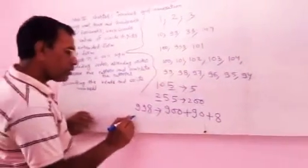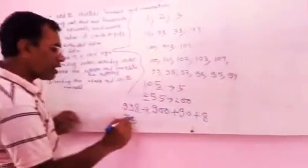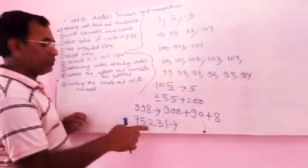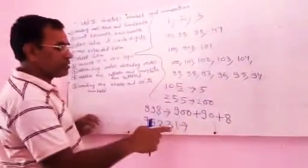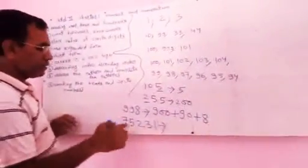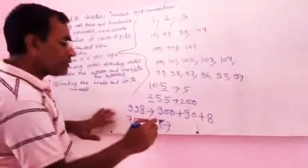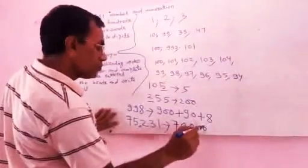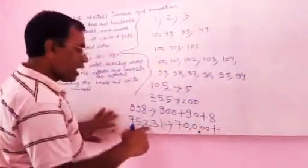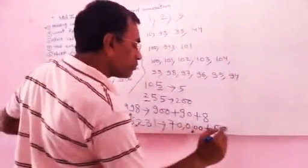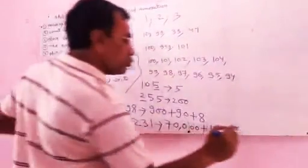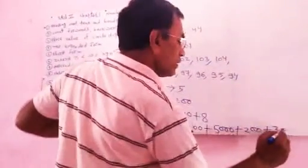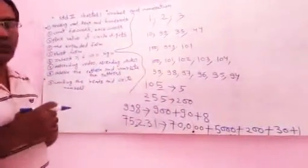Another number: 75,231. The question is to write it in expanded form. You will read: ones, tens, hundreds, thousands, ten-thousands. It means you will write 70,000 plus 5,000 plus 200 plus 30 plus 1. This is the expanded form.